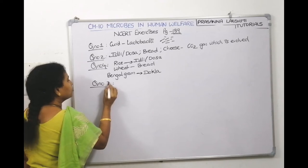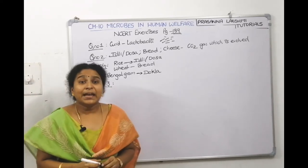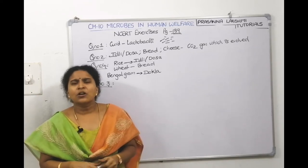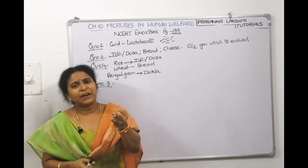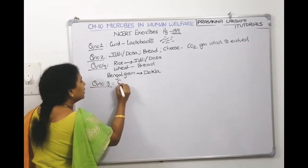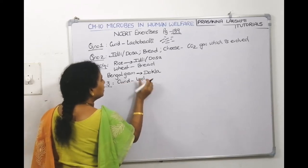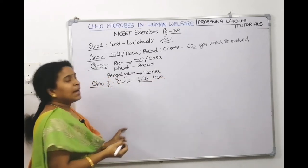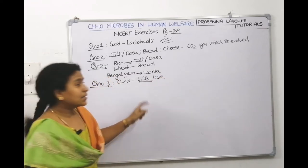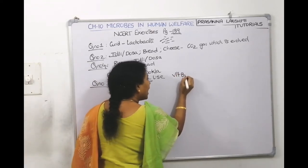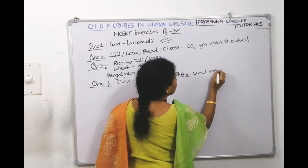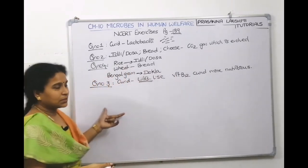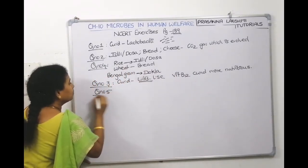Question 4: In which food do you find lactic acid bacteria? In curd, we find lactic acid bacteria (LAB). Their role: LAB secretes Vitamin B12, making curd more nutritious than milk.